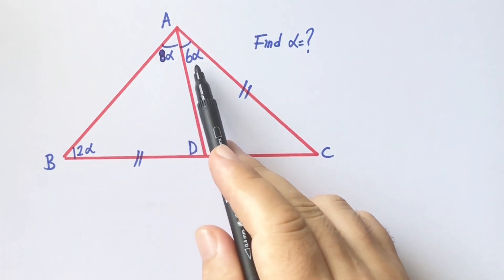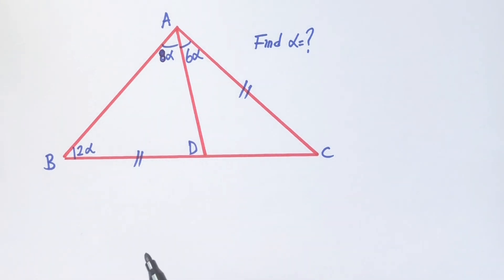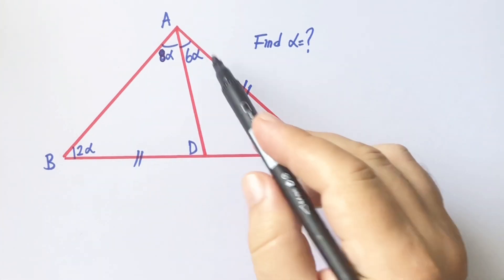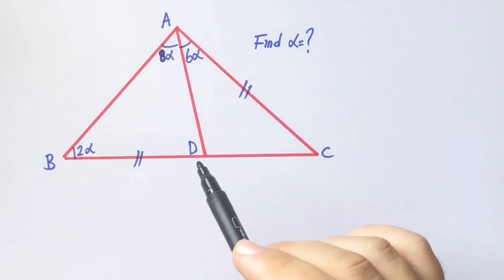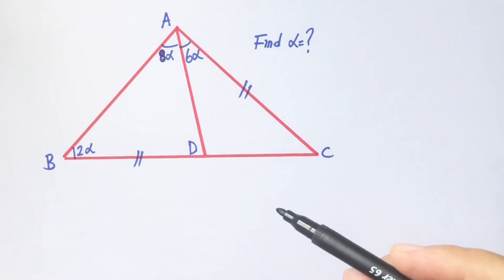Here is 2α, here is 8α, here is 6α, and these two lengths are equal, and then we will calculate the value of α.